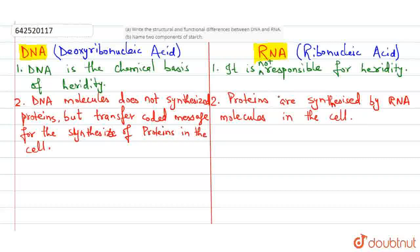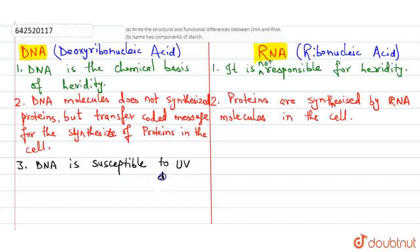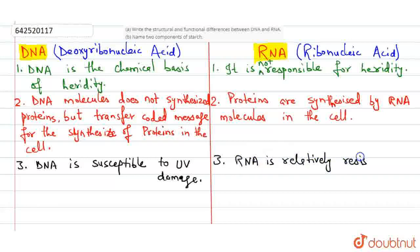Let's go to point three. DNA is susceptible to UV damage — meaning DNA is affected by UV damage. Compared with DNA, RNA is relatively resistant to UV damage. That was the third point.